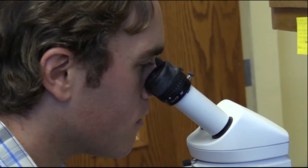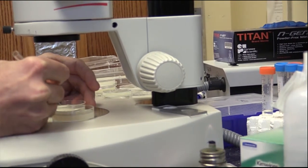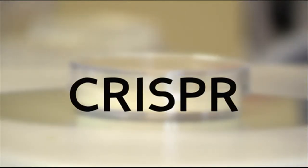UNC researcher Dan Dickinson alters the genes of tiny worms to study how DNA guides the development of life. He uses a technique called CRISPR.